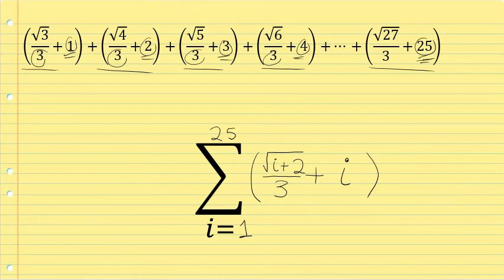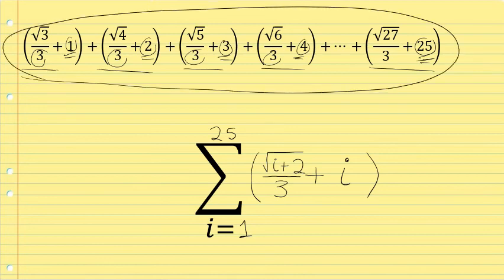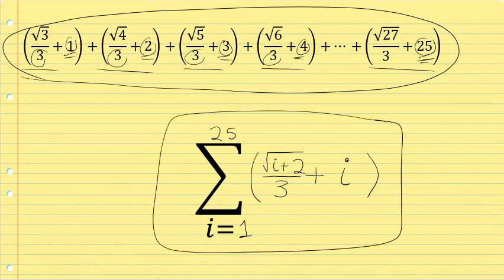In sigma notation, the 25 terms shown at the top of the screen can be represented as the sum as i goes from 1 to 25 of the square root of i plus 2 over 3 plus i.